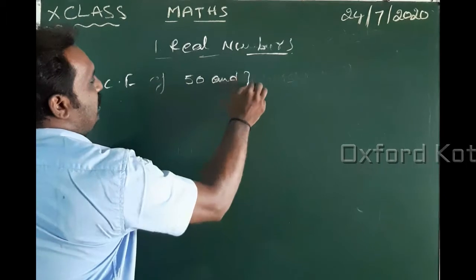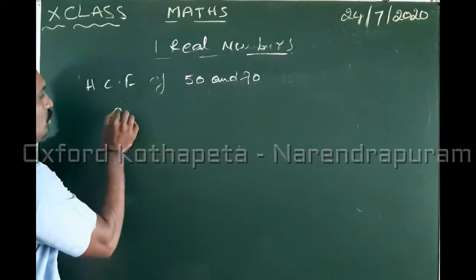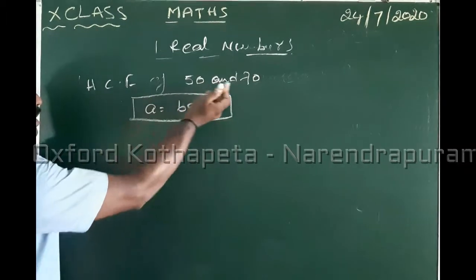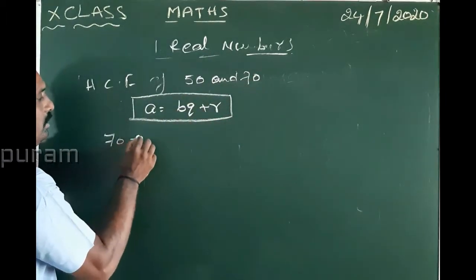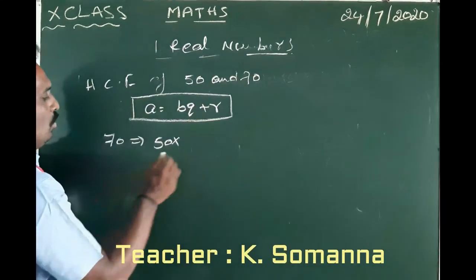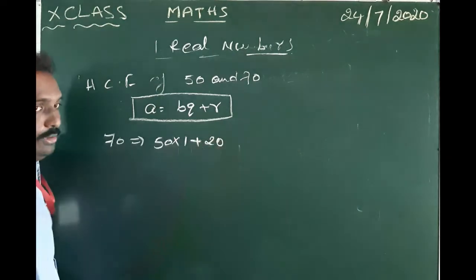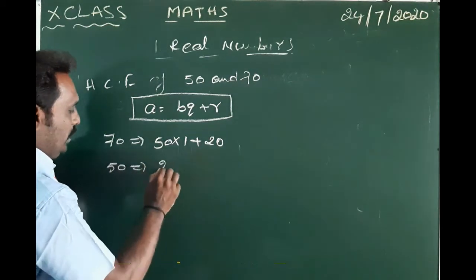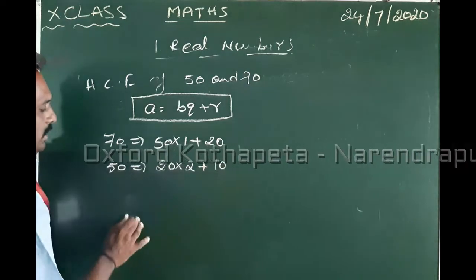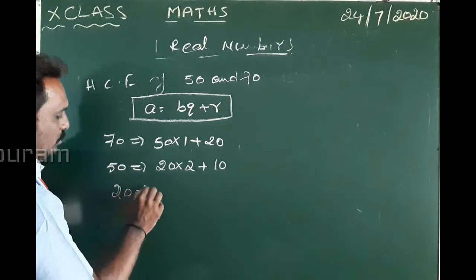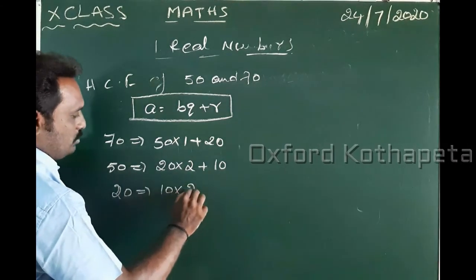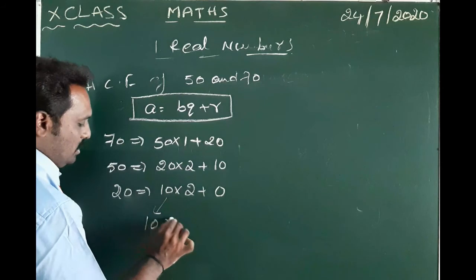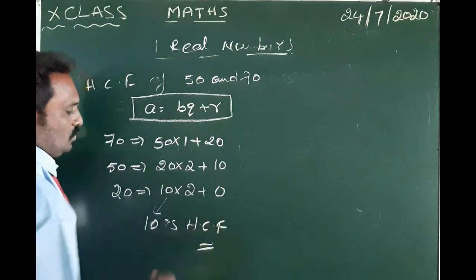Now, find the HCF of 50 and 70. Using formula A = BQ + R, dividend is 70 (the bigger number) and B is 50. 70 = 50 × 1 + 20. Next, 50 = 20 × 2 + 10. Then 20 = 10 × 2 + 0. So, HCF is equal to 10. Thank you.